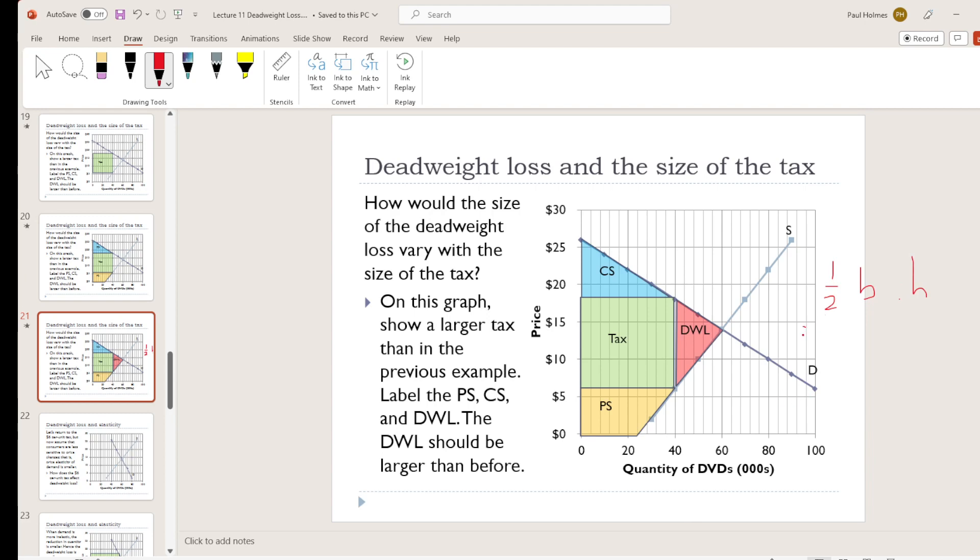This is one half times, I think of this as the height of this triangle, and this as the base. So the height of the triangle is the change in the quantity. The base is the tax per unit.